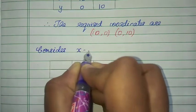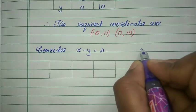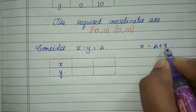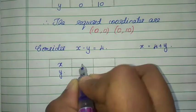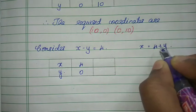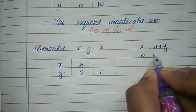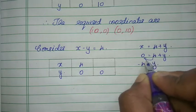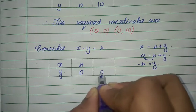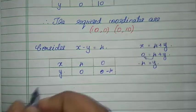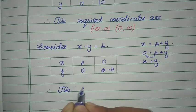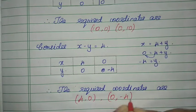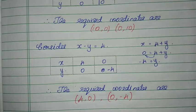Now consider equation 2: x minus y is equal to 4, so x equals 4 plus y. If y is 0, then x is 4. If x is 0, then 0 equals 4 plus y, giving y equals minus 4. Therefore the required coordinates for equation 2 are (4, 0) and (0, minus 4).